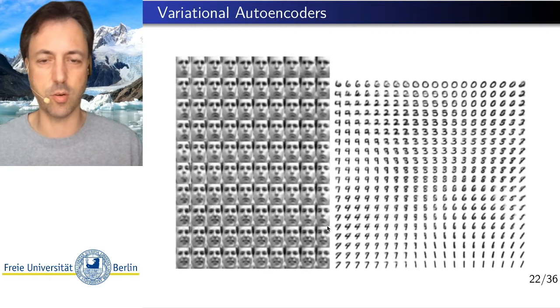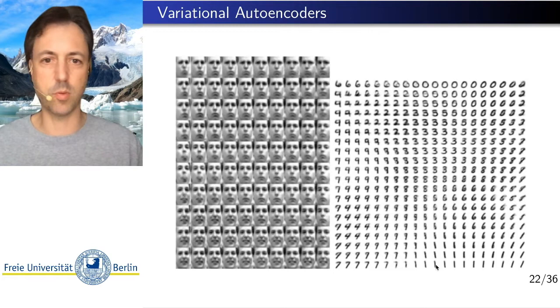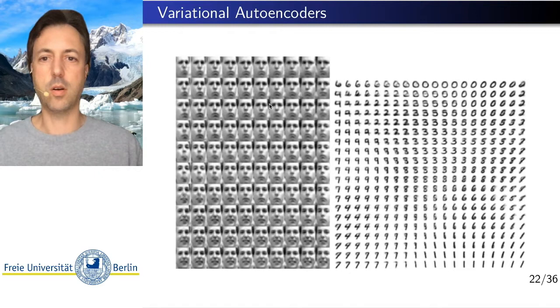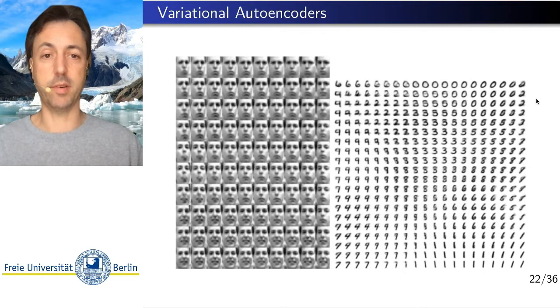And the same situation here for MNIST. So we have 6, 2, 1, and 0. In between, you get sometimes other numbers, sometimes you get things that are in between two numbers. In the middle you get something like 8. So all of these decoded outputs are meaningful within the manifold of image samples that we have trained the variational autoencoder with.